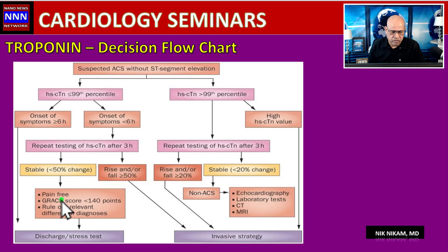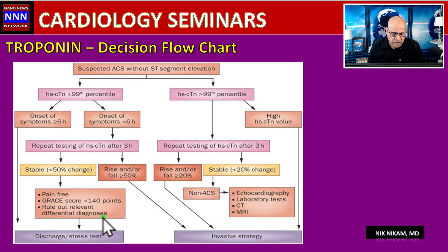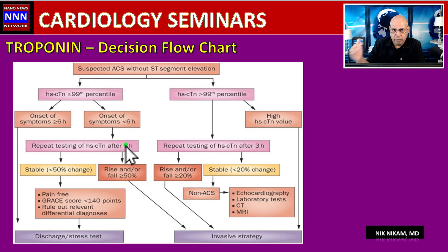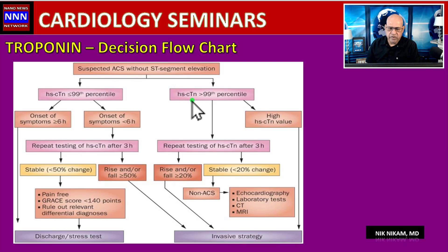If the troponin level is borderline — say 0.3 or 0.4 — repeat the level in three hours. If the troponin levels are stable, and the patient is pain-free with a GRACE score less than 140, we can rule out significant myocardial damage and follow up with appropriate tests.